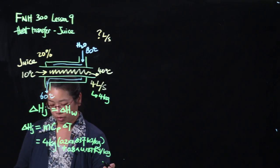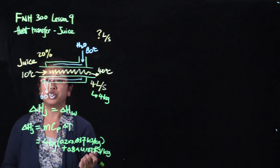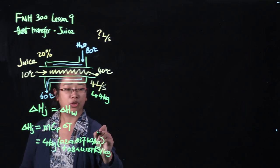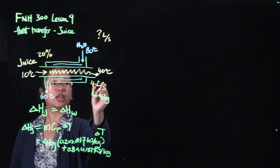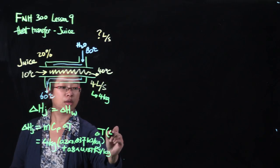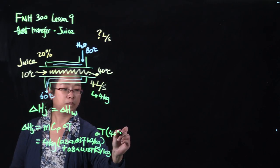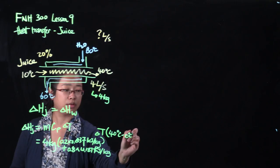And then we know that delta temperature. Sorry, I'm trying to squeeze everything in one part of the board. So delta temperature will be 40 degrees minus 10 degrees Celsius.